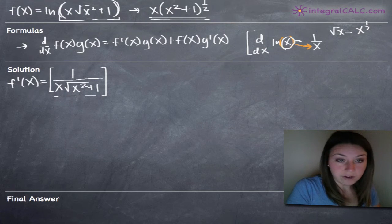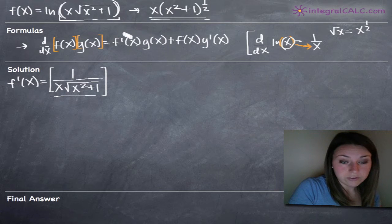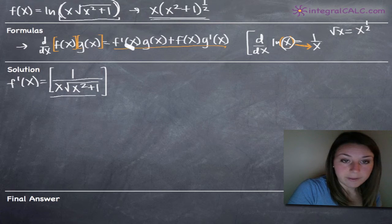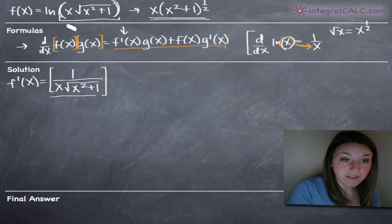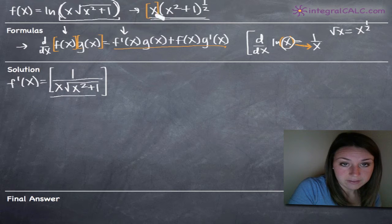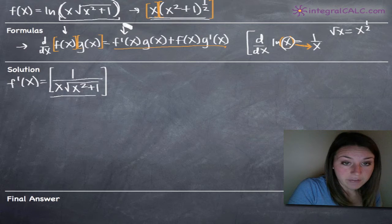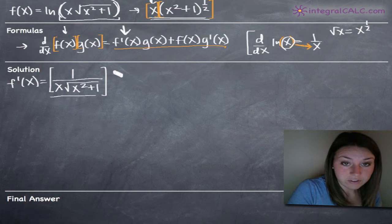We need the product rule, which tells us that when we have two functions multiplied together, f of x and g of x, we use the product rule formula to find the derivative. Going step by step: the first thing we need is f prime of x — the derivative of our first function. Our functions f of x and g of x are x and the quantity x squared plus 1 to the 1/2. So f prime of x, the derivative of x, is just 1.